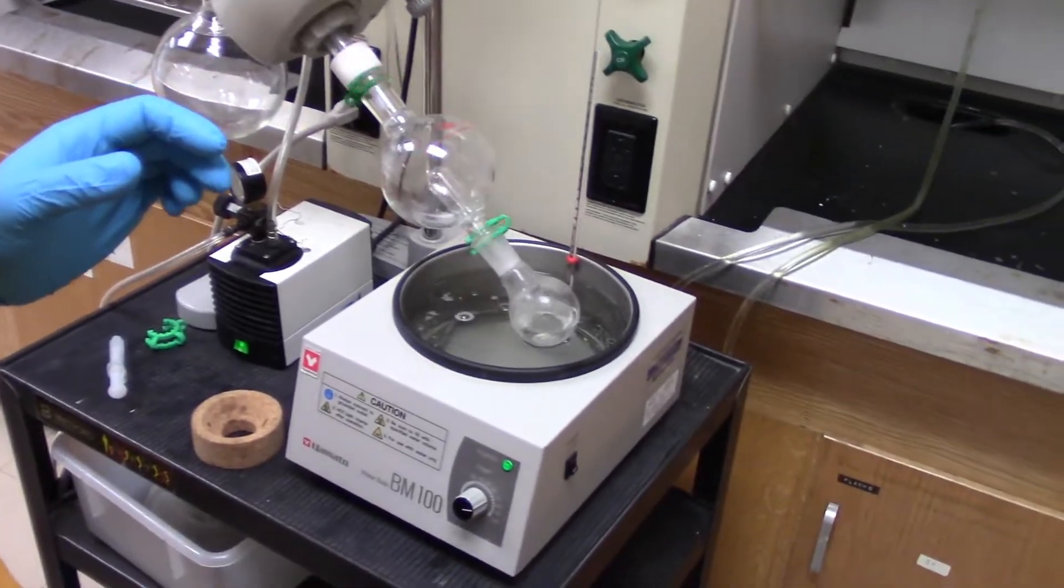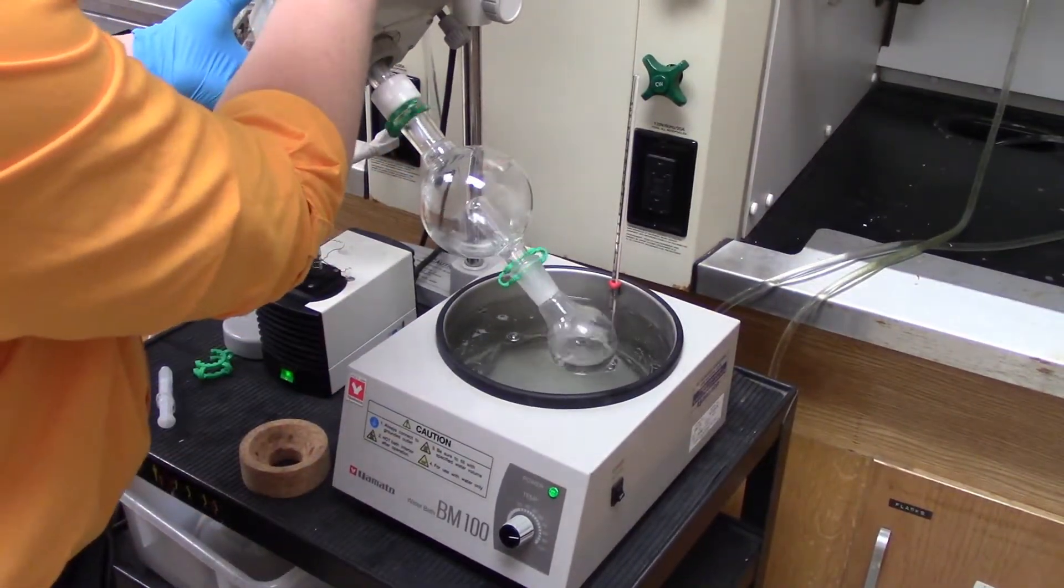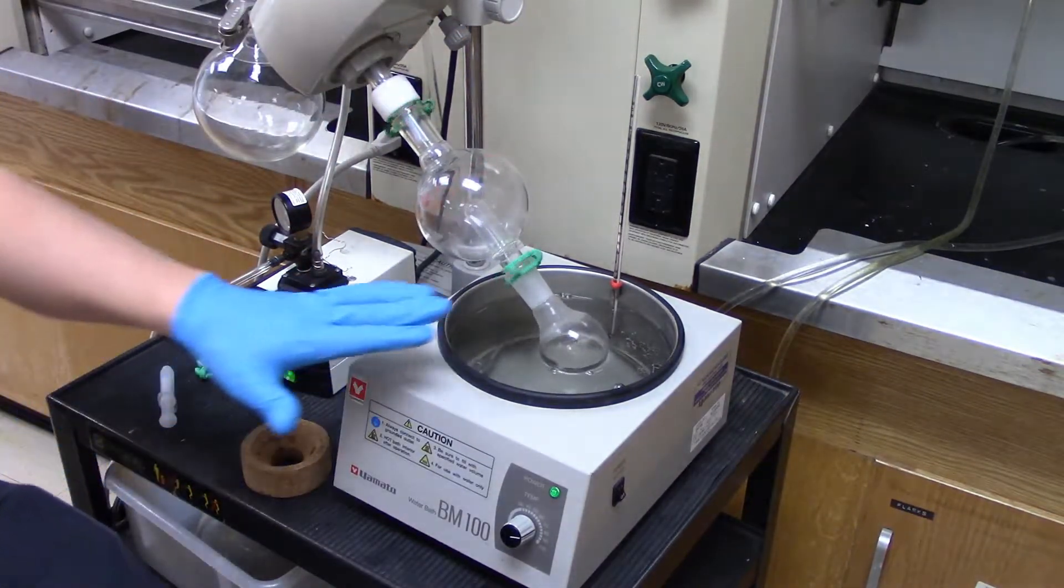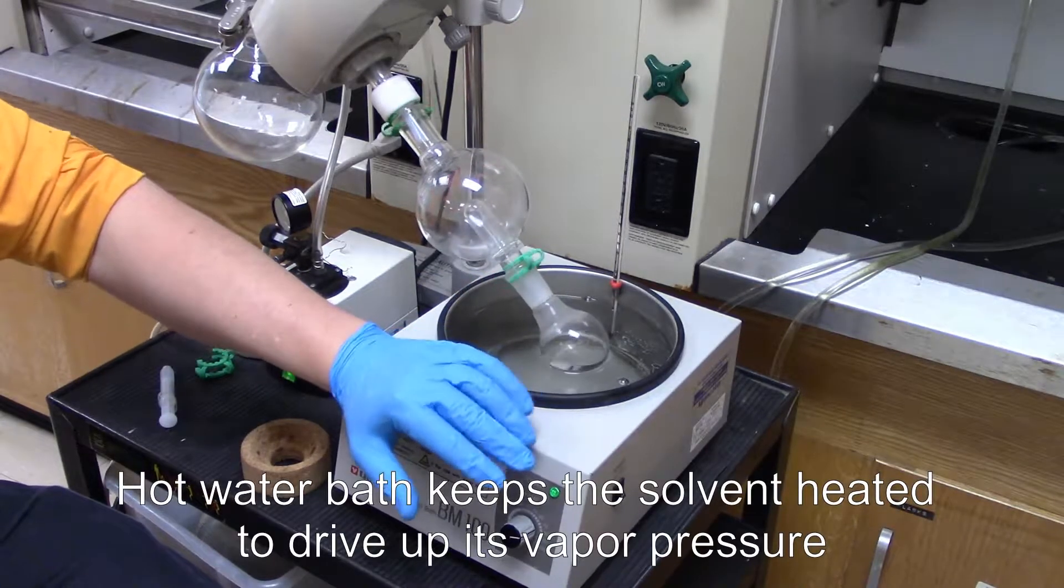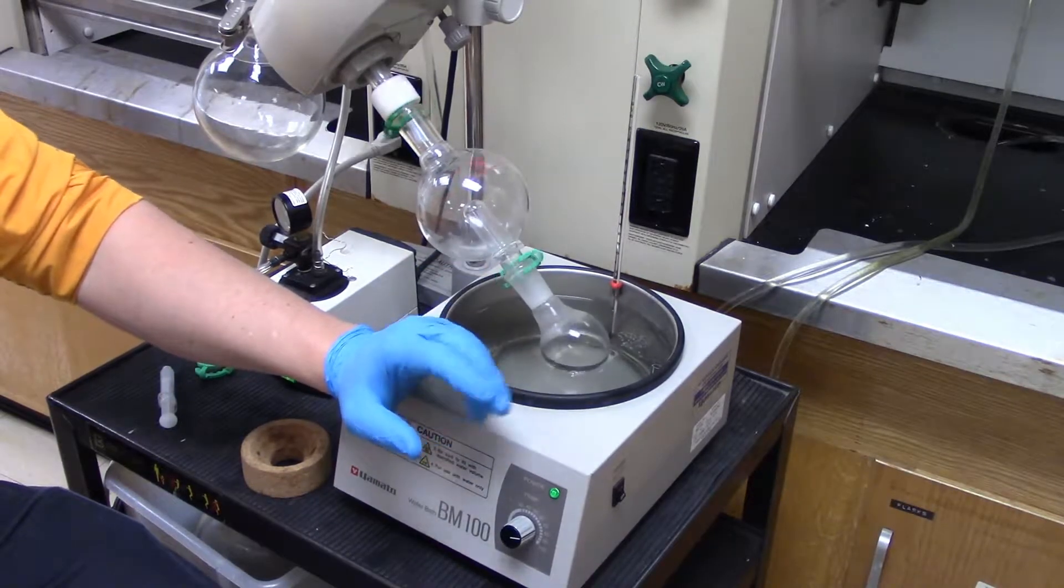Now, as this is running, what you'll notice is that this is circulating in a hot water bath. This puts four things in your favor when you try to remove the solvent. First thing it does is that it heats the material so this way it creates a high vapor pressure for the solvent that you're evaporating. So this won't work for something like water, but definitely a lot of organic solvents disappear quickly.